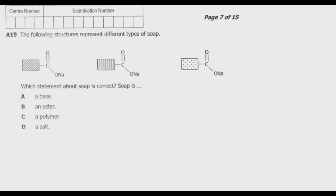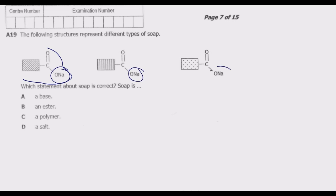Let us look at question A19. The following structures represent different types of soap. Which statement about soap is correct? In all these types of soaps we notice they share a common base group — this component, this component, and this component are all the same.